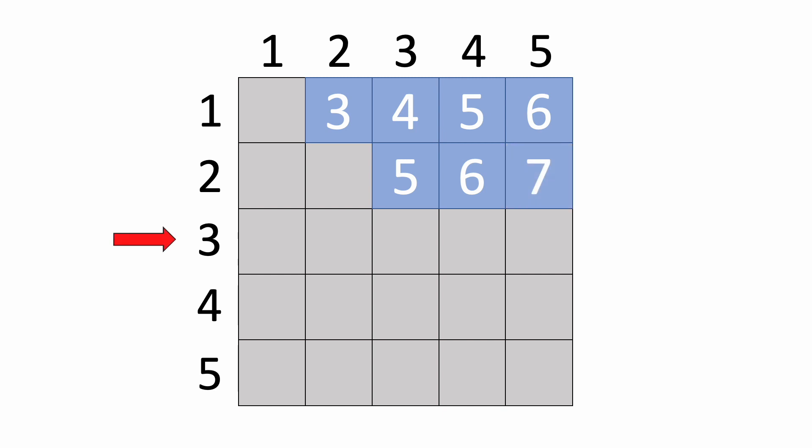Following the same logic, for 3, we'd start with 3 plus 4, then 3 plus 5, and for 4, it's just 4 plus 5. We don't need to do the last row, because all the combinations for 5 have already been calculated here.